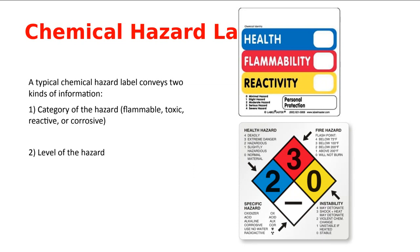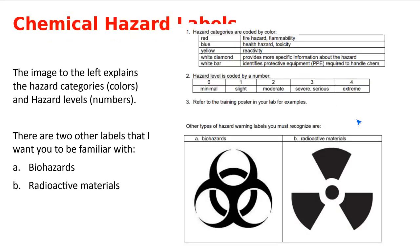The second category is a number that communicates the level of the hazard. Zero is minimal, one is slight, two is moderate, three is severe, and four is extreme hazard. That covers the hazard communication system for the bar label and the diamond label.